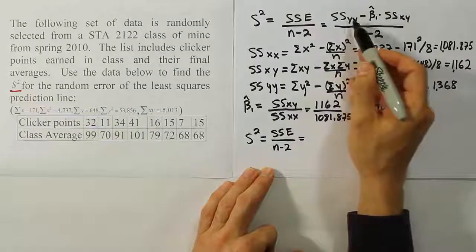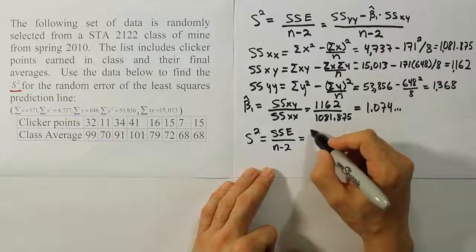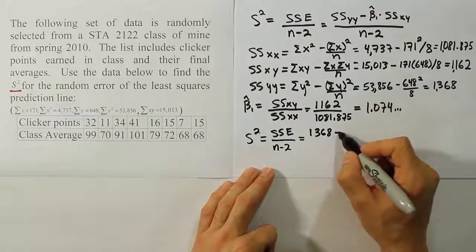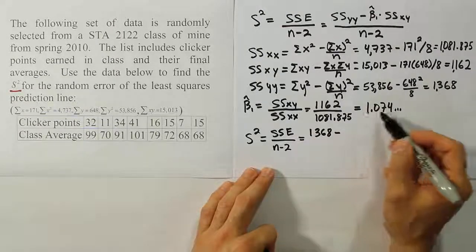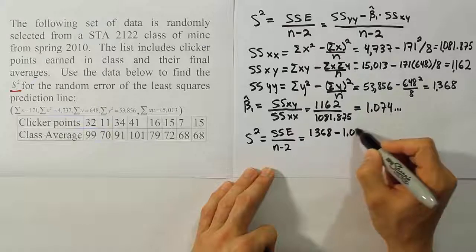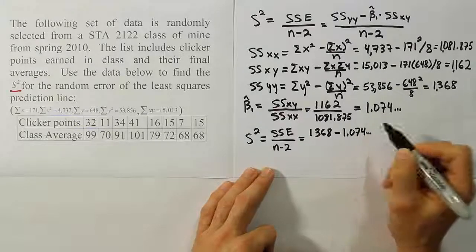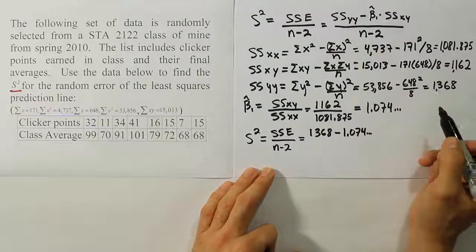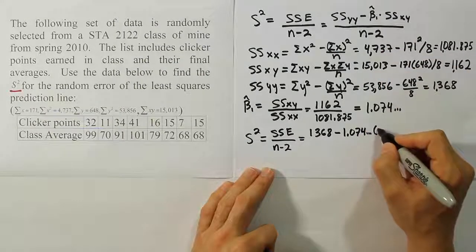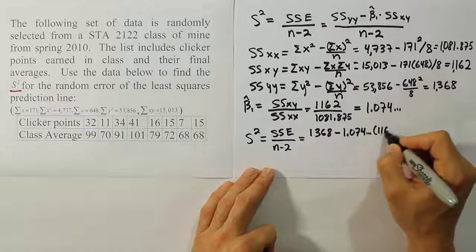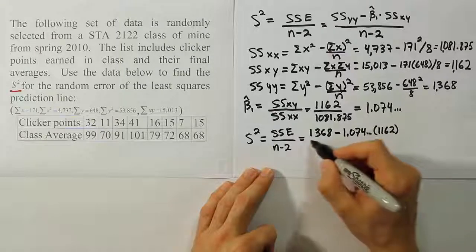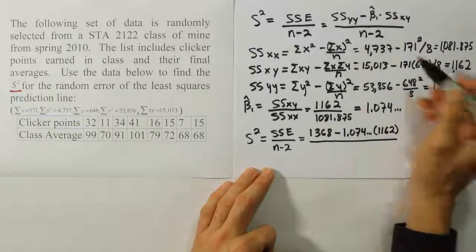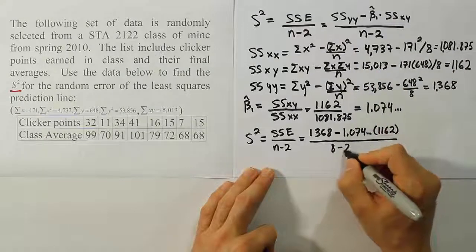Which for us is going to be the sum of squares for YY, which we saw was 1368, minus the beta 1 hat value, which is 1.074 repeating or dot dot dot, times the sum of square for XY. And the sum of square for XY was a nice even number, 1162. And then we'll divide that all by the number 8 minus 2, so in other words 6.